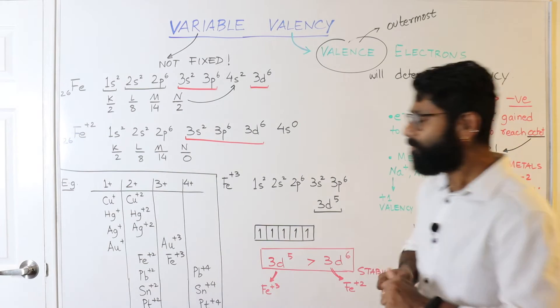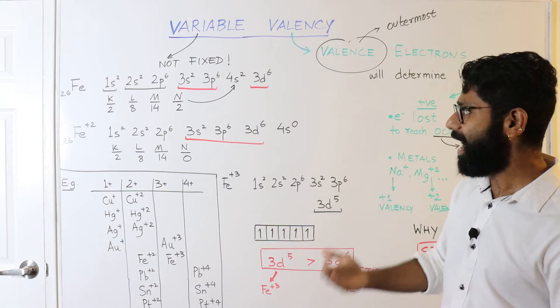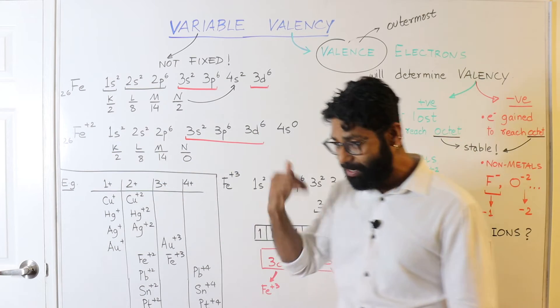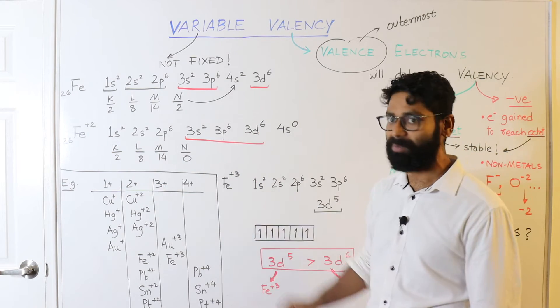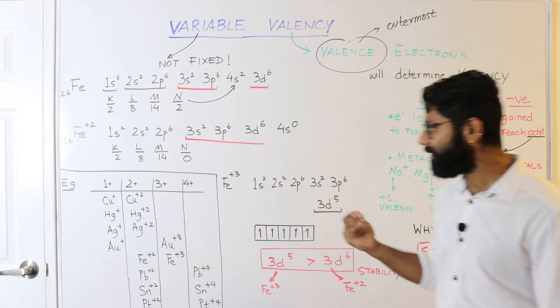Now, we can understand till here, but what is the logic behind iron 2+, losing one more electron to become Fe3+. The simple answer is stability.